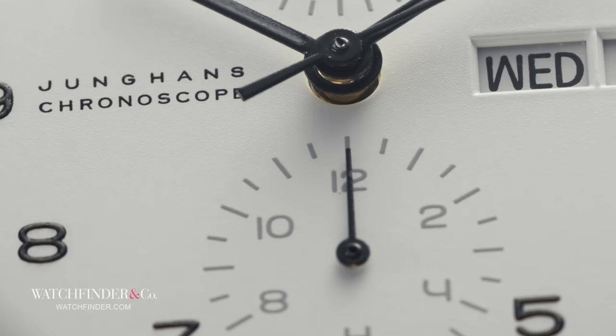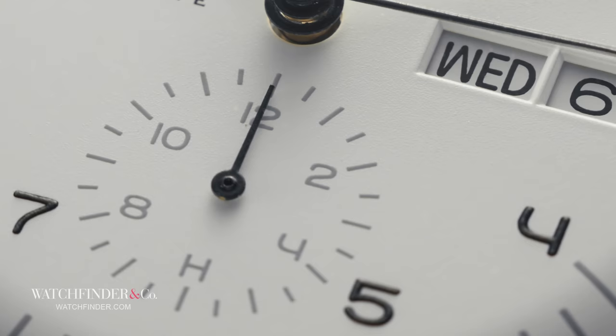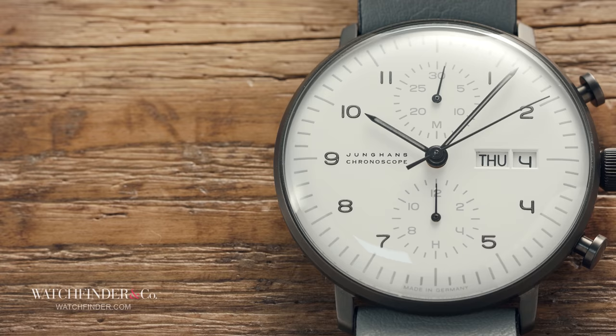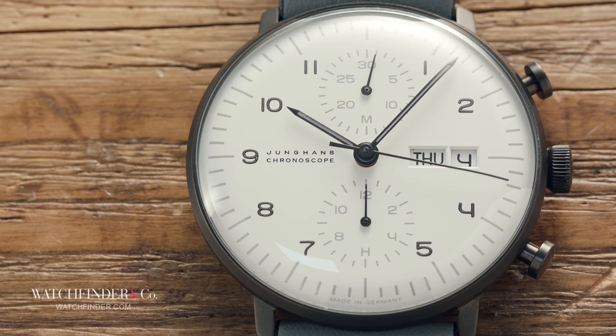Despite the hardships, Junghans still found the time to produce its first wristwatch chronograph, as well as the first chronometer-rated self-winding movement, and become the third largest producer of chronometer-rated movements in the world. The brand, however, needed a kickstart, something fresh and exciting to see off this new post-war era. Enter Max Bill.